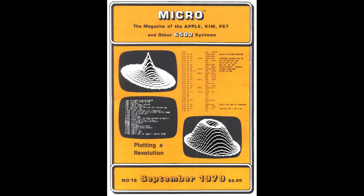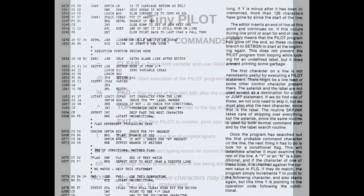Let's fast forward. It's 1979, and in this issue of Micro Magazine, Tiny Pilot by Nick Virtus appeared, complete with the full listing and explanation of how the program internals all worked.